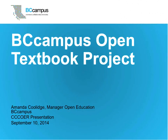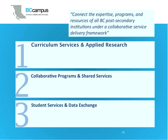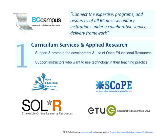Great, thank you Una. So the first question we often get is where is BC Campus? We currently have two offices — one in Victoria and one in Vancouver — and for those south of the border, we are north of Seattle. BC Campus is a publicly funded organization and we use information technology to connect expertise, programs, and resources of British Columbia institutions under a collaborative service framework. We have three frameworks: curriculum services and applied research, collaborative programs and shared services, and student services and data exchange.